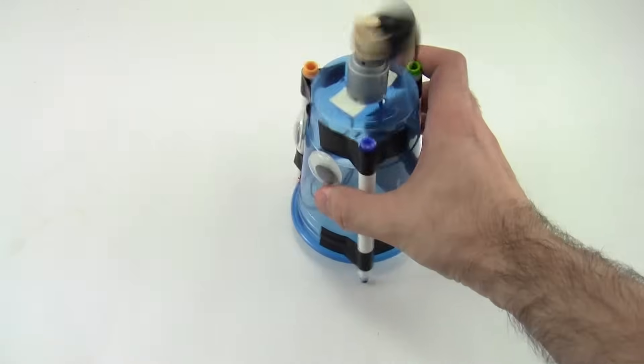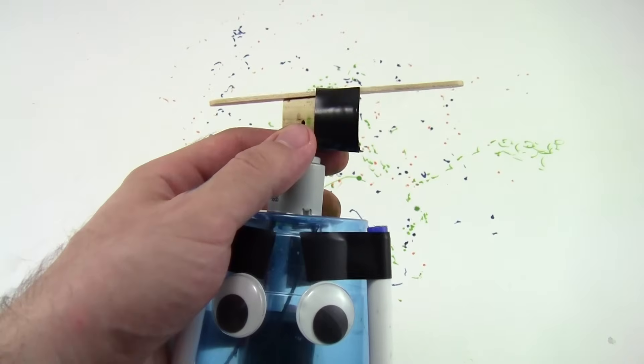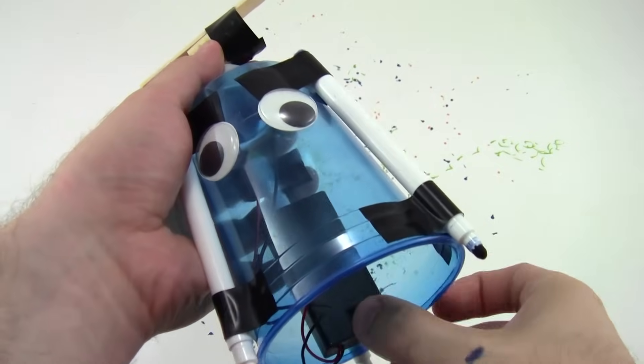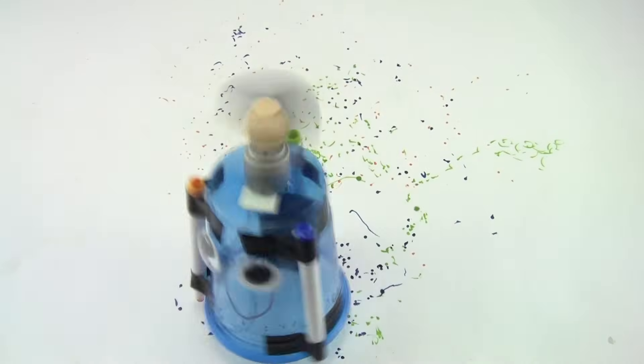Now, turn your ArtBot on, put it down on a piece of poster board, and watch it create art as it moves. If your ArtBot falls over a lot, try moving the popsicle stick so it is more centered on the cork. What type of art will your ArtBot create?